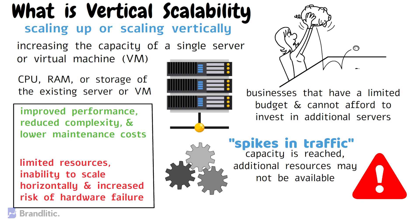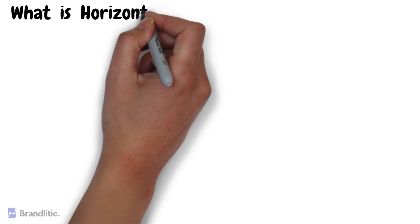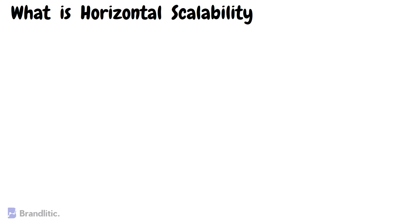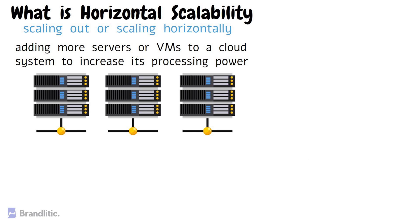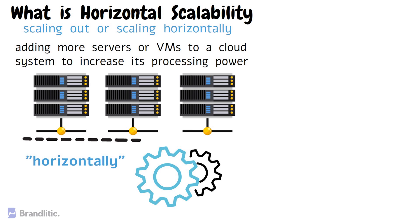Next, let's discuss what is horizontal scalability. Horizontal scalability is also known as scaling out or scaling horizontally, and involves adding more servers or virtual machines to a cloud system to increase its processing power. Horizontal scaling focuses on expanding the system horizontally by adding more resources in parallel, rather than increasing the capacity of individual instances.